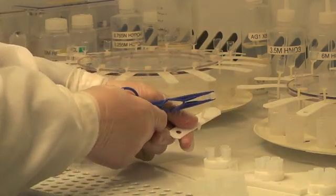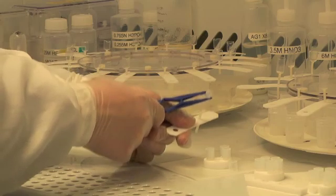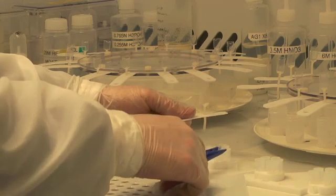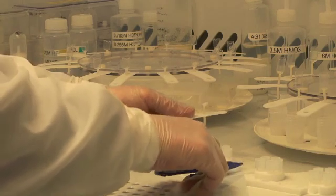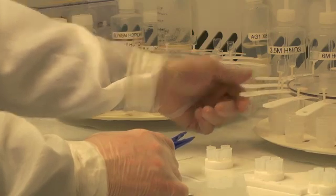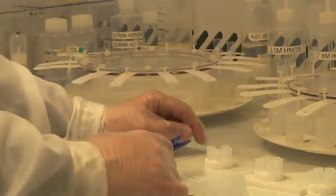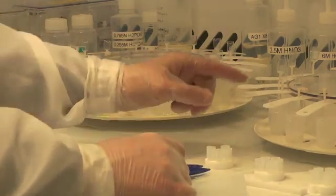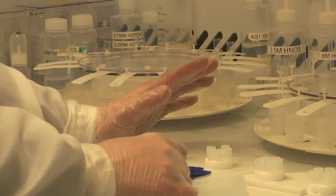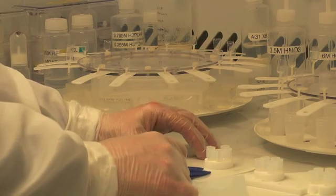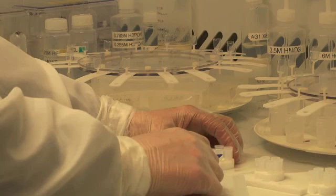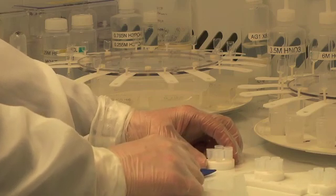The acid that I'm loading the samples in allows both lead and uranium to stick to the column. The loading acid will drip through the column and be collected in the beaker. In this case, I'm collecting that acid which does not contain uranium and lead because it contains other elements of interest, specifically hafnium which we can measure by other forms of mass spectrometry for its isotopic composition.